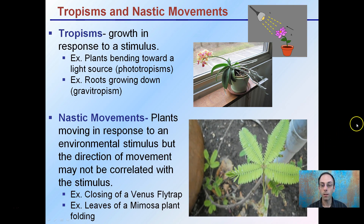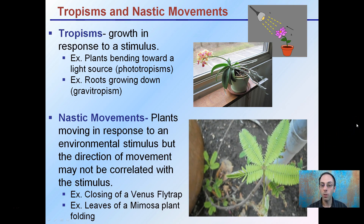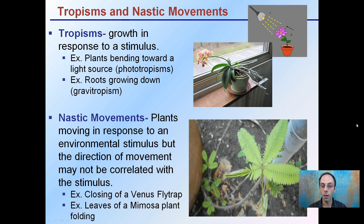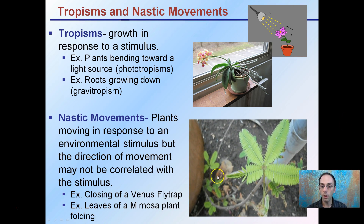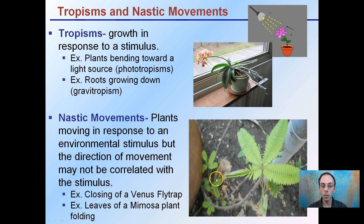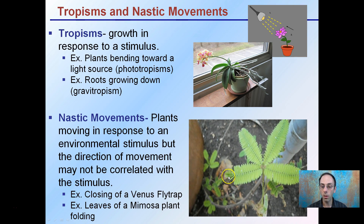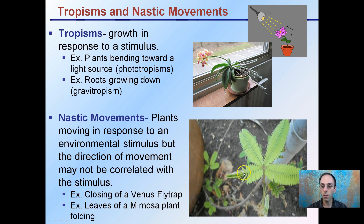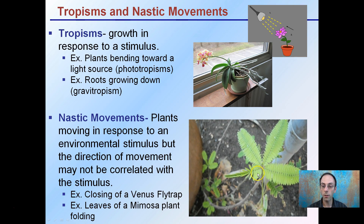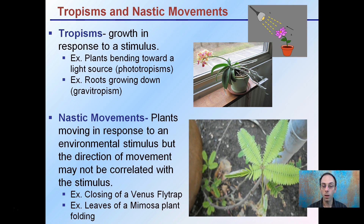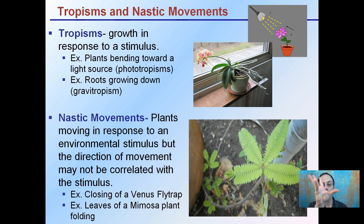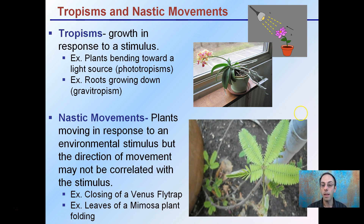Nastic movements are plants moving in response to an environmental stimulus, where the direction of movement may or may not be correlated with the stimulus. This is shown here with a sensitive plant — a Mimosa — where you can see someone poke the end and all the resulting effects of the plant folding. Plants do this to try to reduce impact from herbivores. The Venus flytrap closing is another example of a nastic movement.